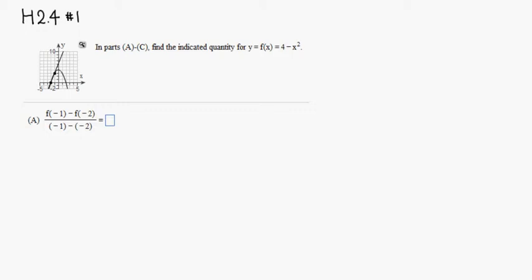So this is pretty easy because all you really have to do is evaluate each one. So f of negative 1, you plug in negative 1 for x. So it's 4 minus negative 1 squared, so 4 minus 1.